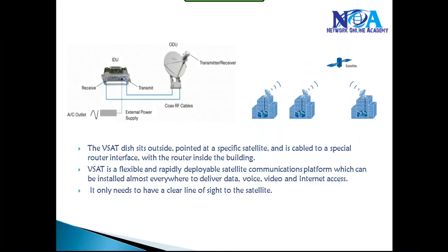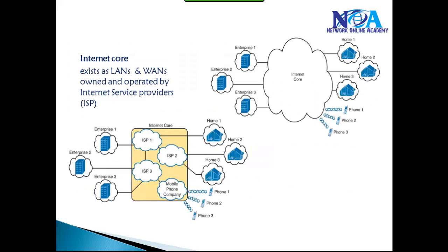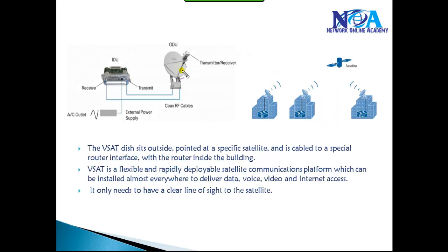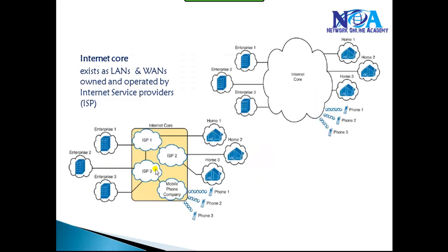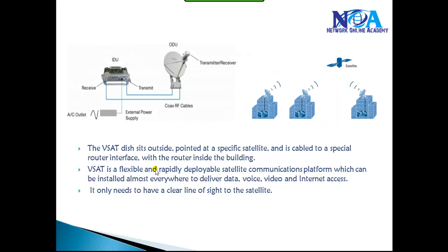For remote locations, vSAT uses an input device and output device. It takes signals in the form of radio frequency signals, converts them into cable signals, and connects back to the router where you build a WAN connection through satellite connections.